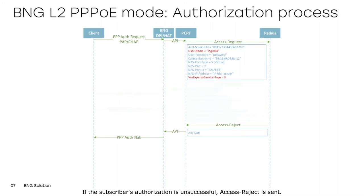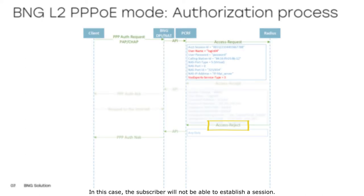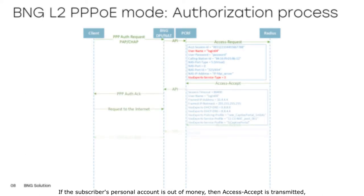If the subscriber's authorization is unsuccessful, an access reject is sent. In this case, the subscriber will not be able to establish a session.